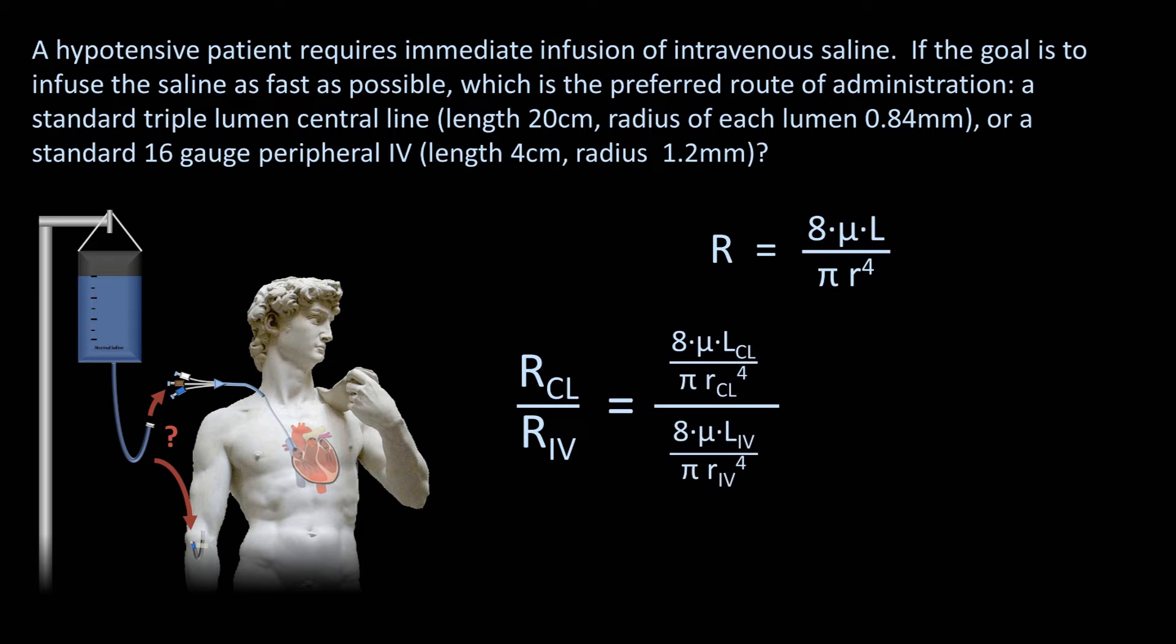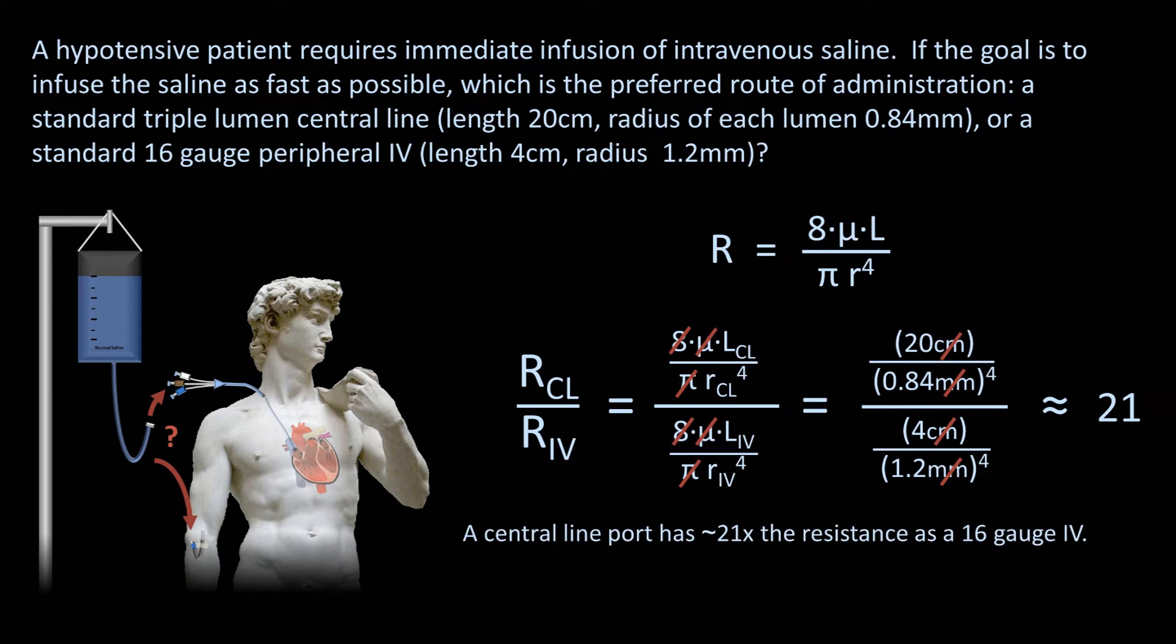If we substitute in 8 times viscosity times length divided by pi r to the fourth in both the numerator and denominator of this ratio, all of these cancel out. Let's next add the value for the lengths and radii. The centimeters and millimeters cancel out, and this computes to about 21. In other words, a central line port has about 21 times the resistance as a 16 gauge IV. Therefore, IV fluids will infuse about 21 times as fast through the IV compared to a central line.